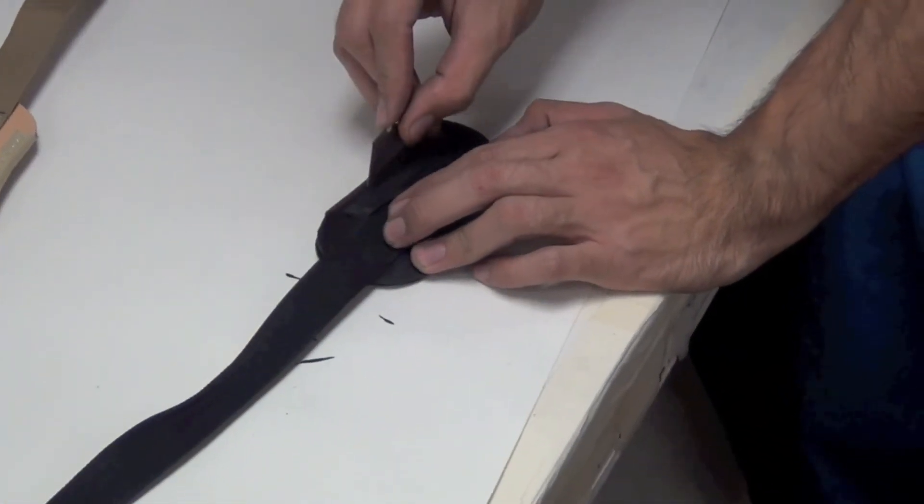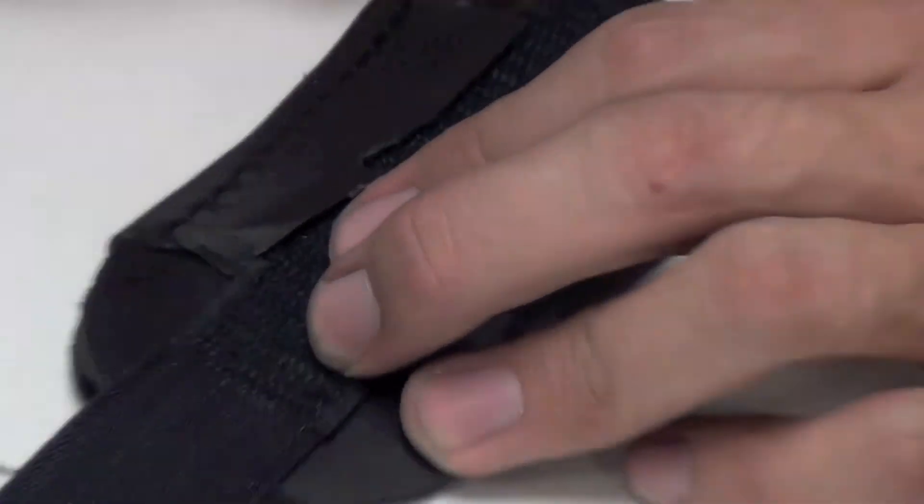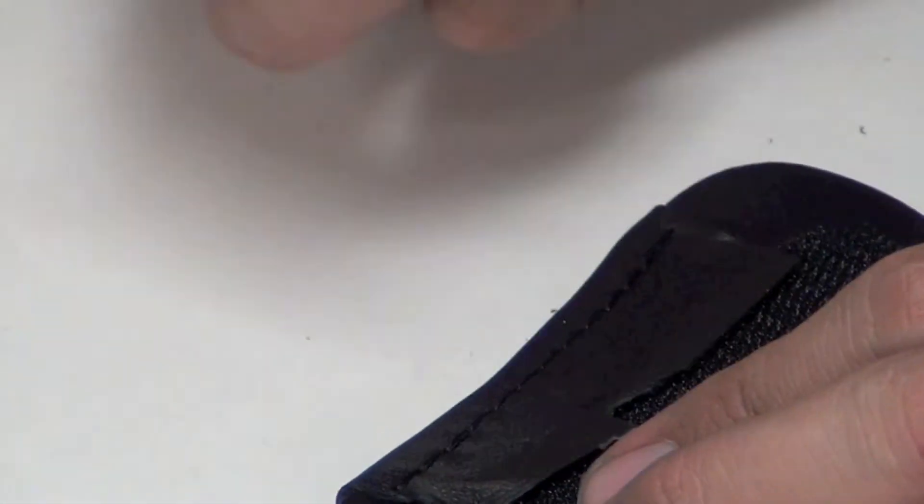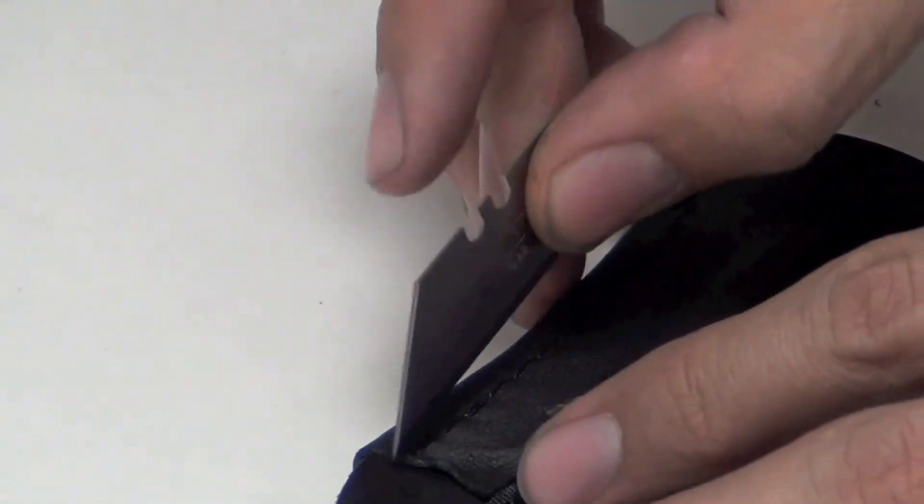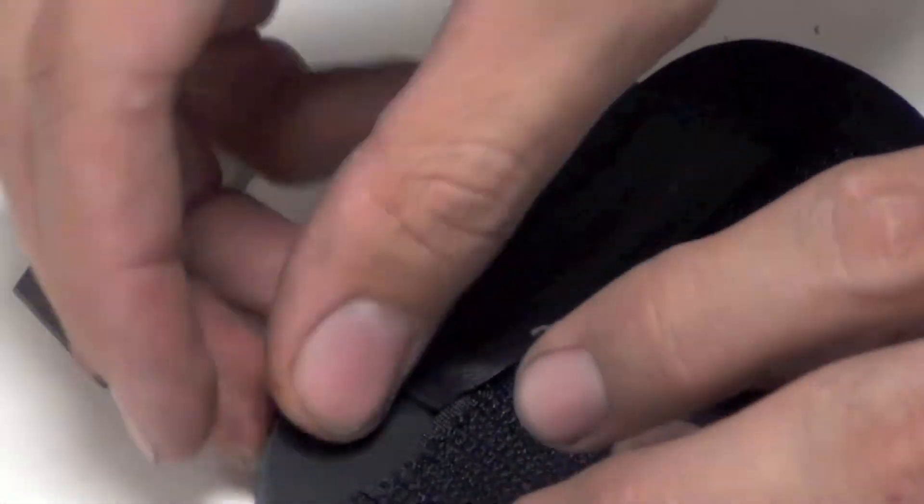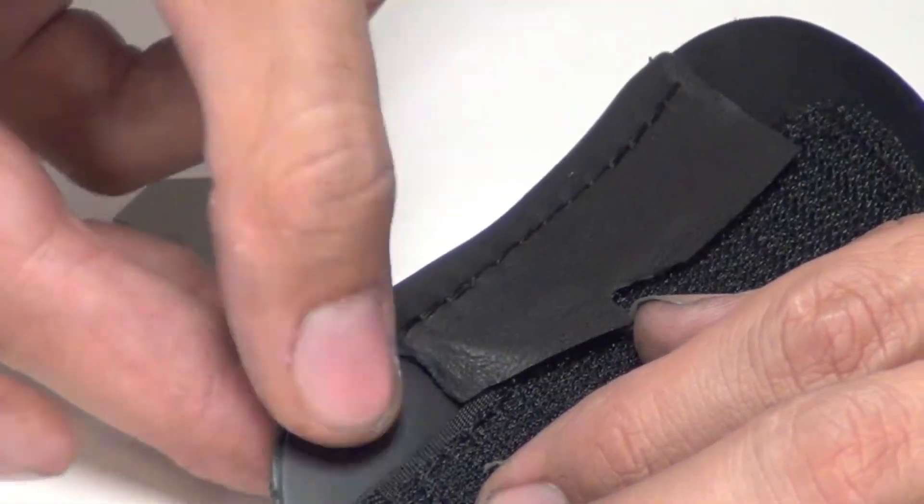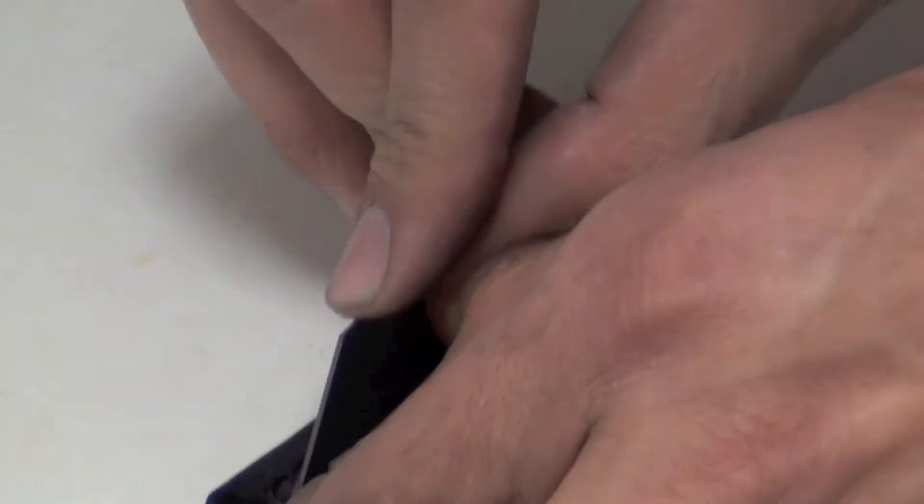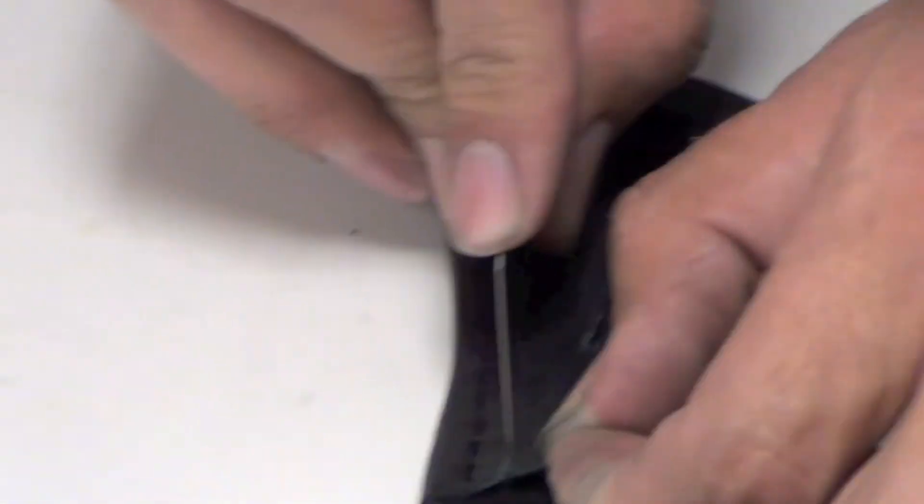Now I'm going to take a razor blade and trim this edge here. When you're doing this, I'd use a pretty sharp razor blade and just don't push very deep. It's alright if you have to make a couple of passes to cut through, but you just don't want to push really deep and cut through and cut a lot through the leather underneath.